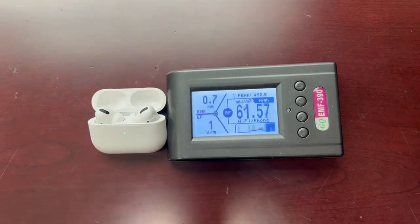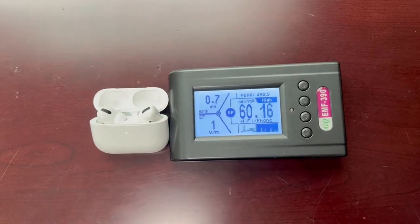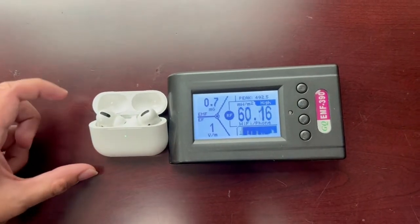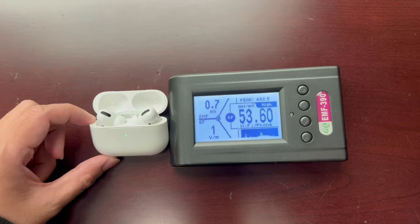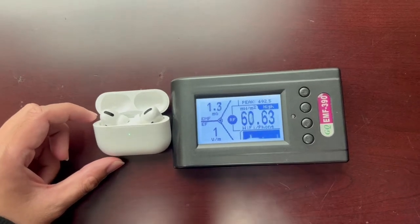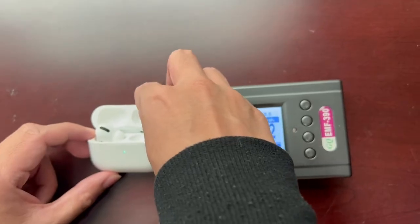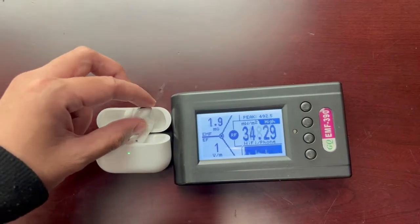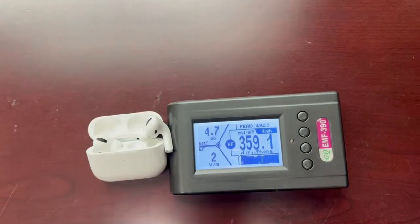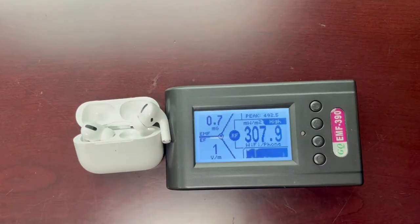Let's open it. There's about 60 milliwatts per square meter here. Now let's take one out and power it on. Oops, sorry about that. Wow, this one is without even connecting to the cell phone.